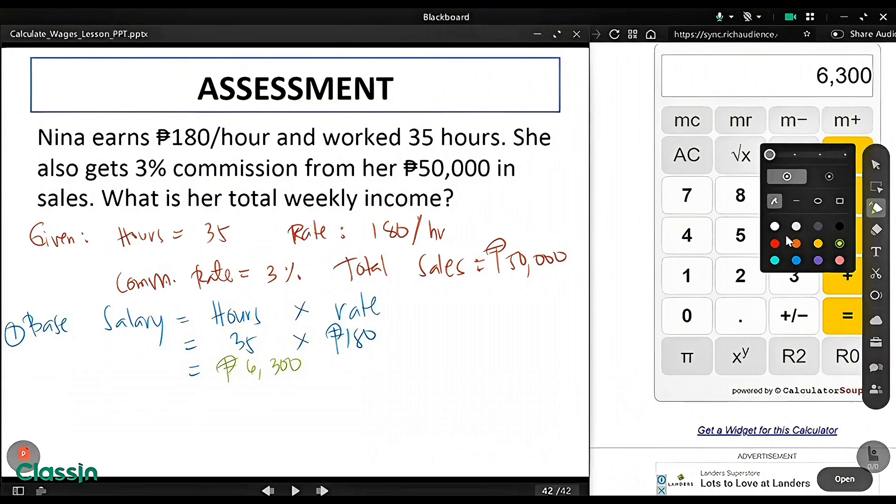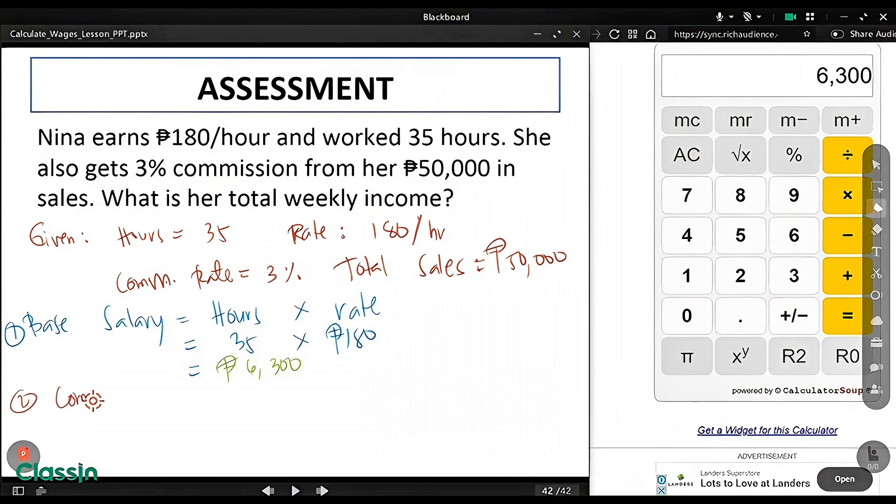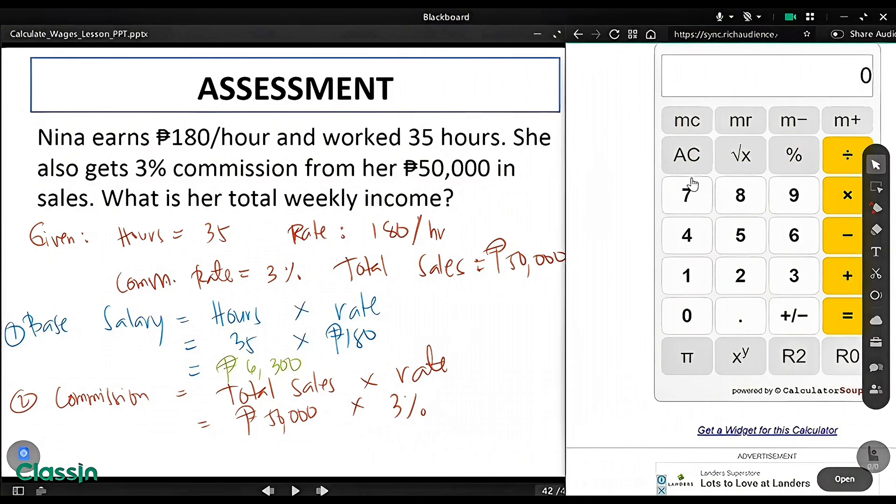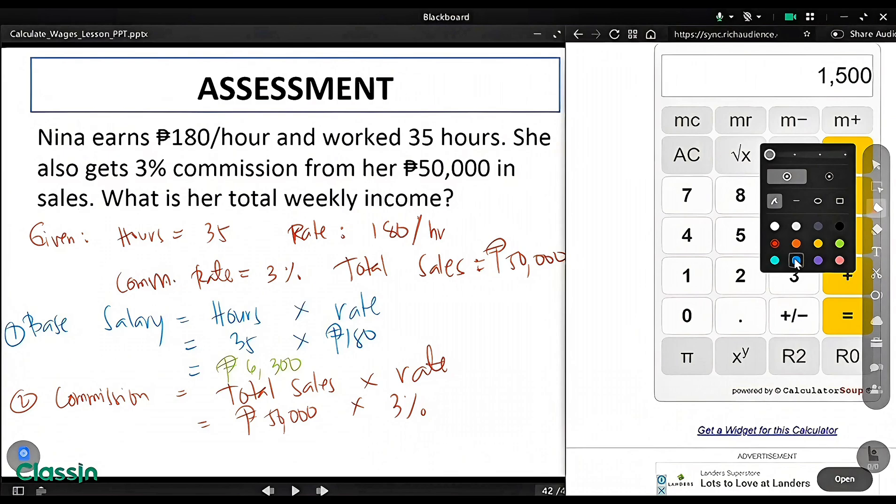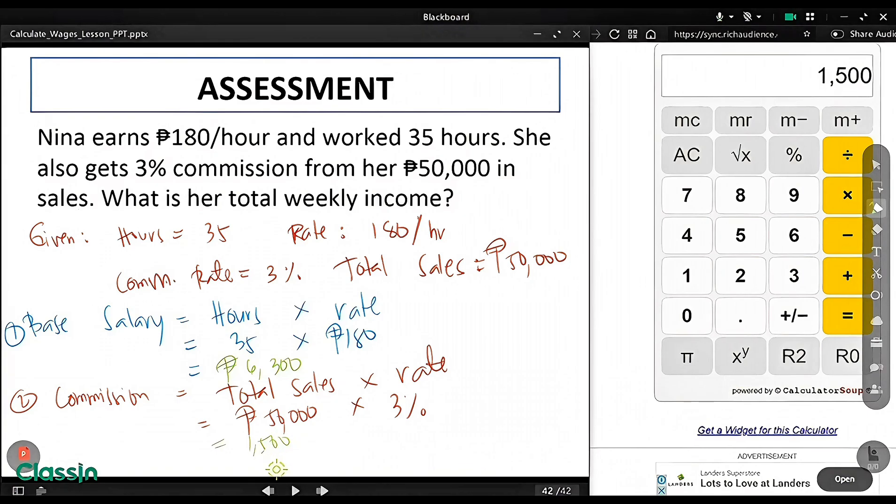Now, for step 2, for the commission, commission pay will be total sales times your commission rate. This one is 50,000 times 3 percent. The commission of Nina is 1,500. So, we have here the salary of Nina, which is 6,300 in working 35 hours, and the commission of Nina is 1,500 pesos.